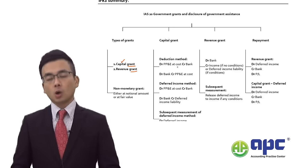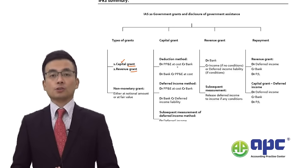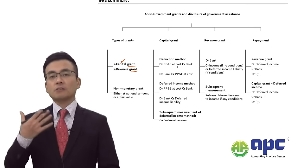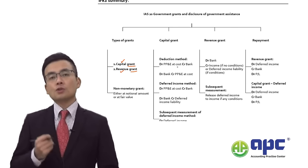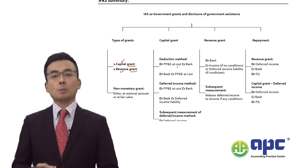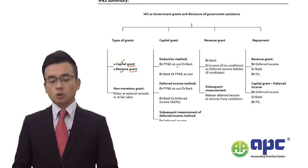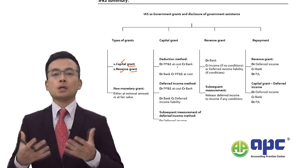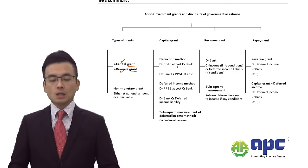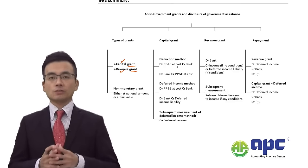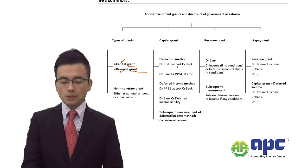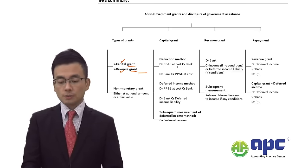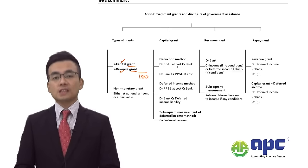Alternatively, if you've incurred expenditures such as marketing or salary costs, the government may reimburse you — this is called a revenue grant. In practice, if you receive money from the government, you separate it into the capital and revenue grant elements — for example, $70 related to capital and $30 related to revenue.